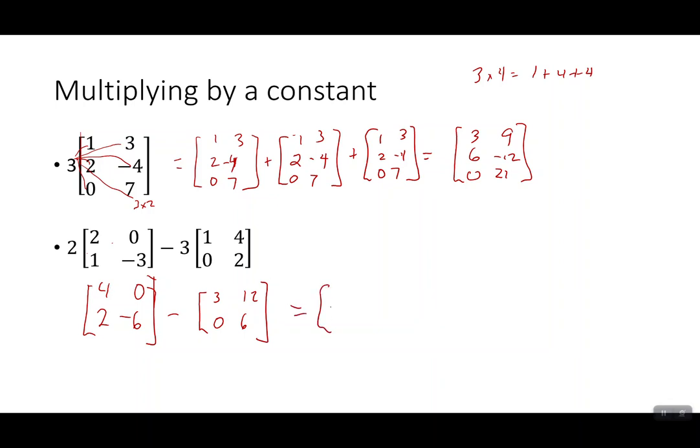4 take away 3 gives you 1. 0 take away 12 gives you -12. 2 take away 0 stays 2. -6 minus 6 is -12. You just got to be careful there with the negative signs. Sometimes it's easier to add a negative than it is to subtract.